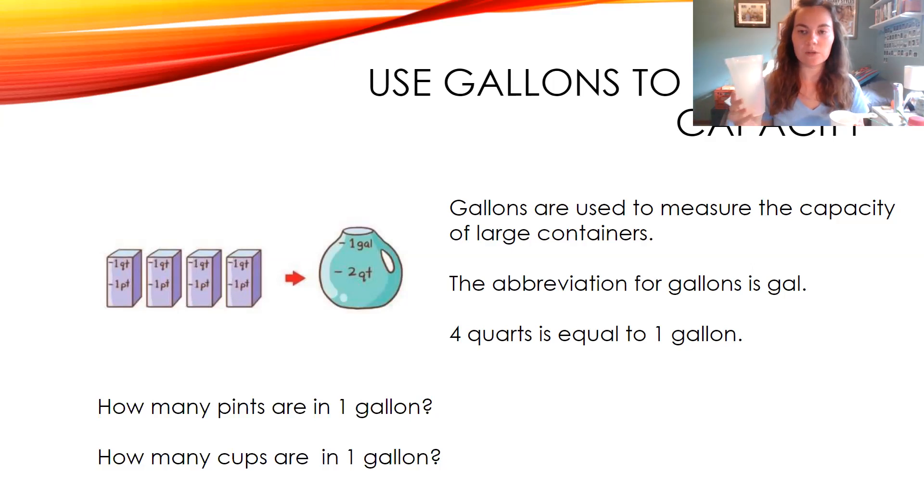So there are eight pints in one gallon. And there's two cups per pint. So how many cups does that give me per gallon? We have 16 cups per gallon.